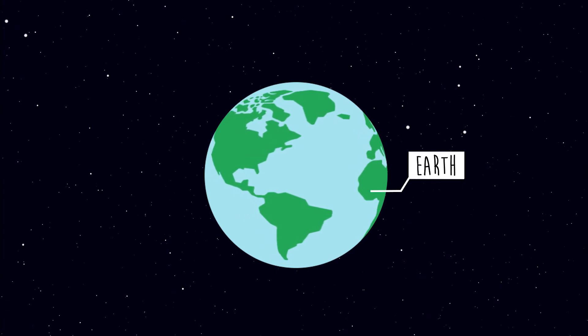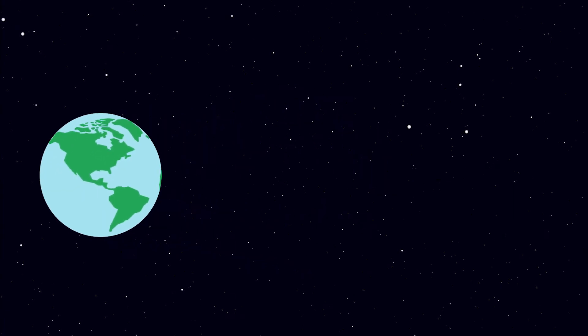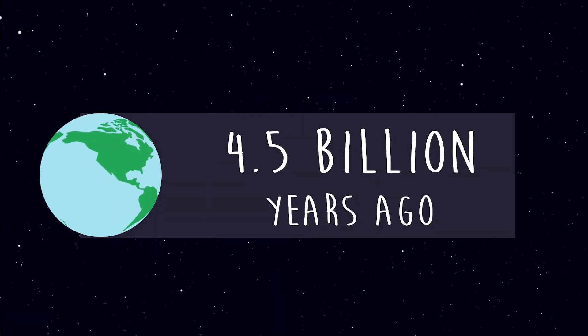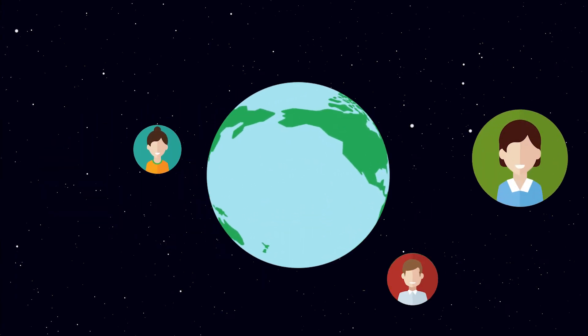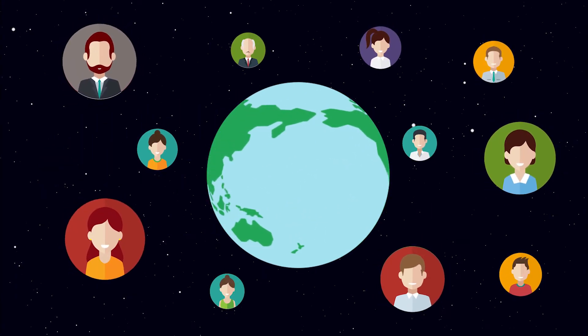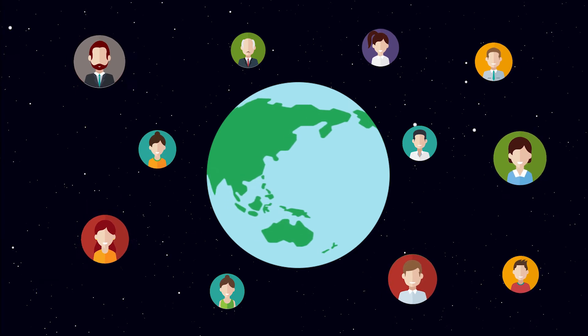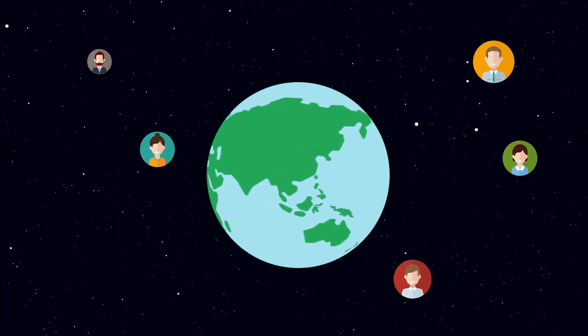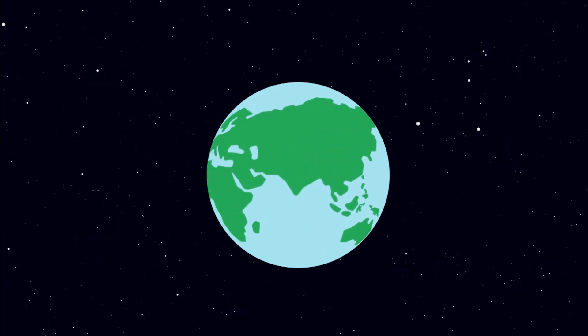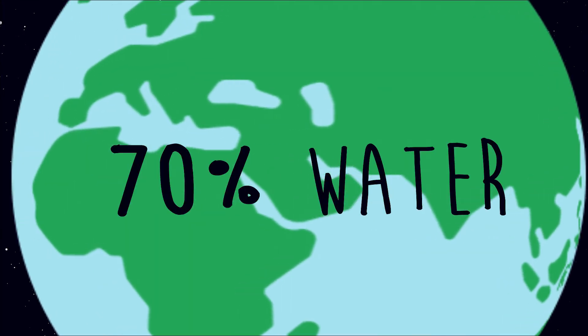Earth is the third planet from the Sun and was approximately formed 4.5 billion years ago. It is the only known planet to support life, having a full year lasting just over 365 days. 70% of the Earth's surface is covered by water.